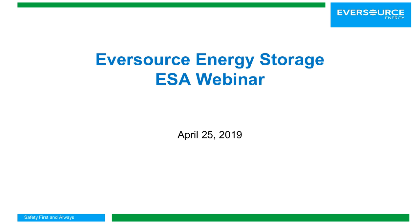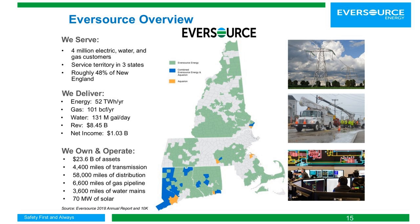A reminder that everyone can submit questions via the chat box and we'll do Q&A at the end. Next, we have Steve Casey, Manager for Strategic Planning at Eversource. I'm going to focus on our utility-scale grid-connected storage — not behind-the-meter projects. Eversource is the biggest electric utility in New England, with four million electric, gas, and water customers across three states. The only generation we own at this point is 70 megawatts of solar in Massachusetts. We're pretty much fully deregulated and are a transmission and distribution focused company.